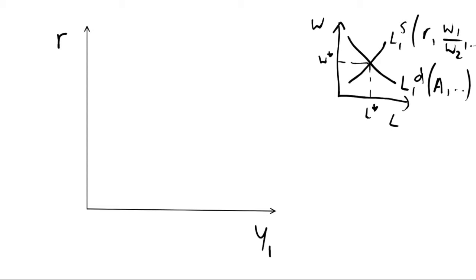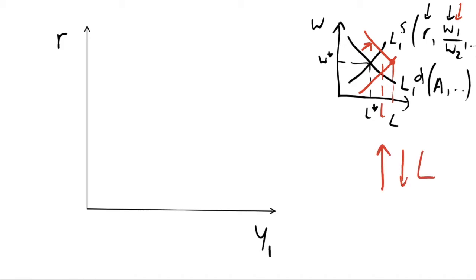Our supply of labour in period one depends on our relative wage rates, and if we change any of the factors that these curves depend on, we're going to cause a shift in the curve. So if we increase productivity we're going to shift out the demand curve, giving us a new labour supply choice. This all affects our output — our supply of output in the economy — because we're increasing or decreasing labour, and as discussed in the previous video, our output is some function of labour. So if we increase labour we're going to be increasing output.